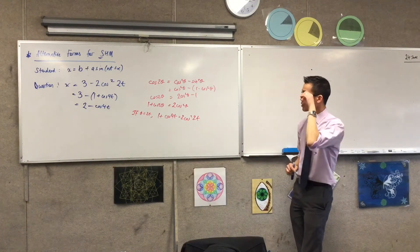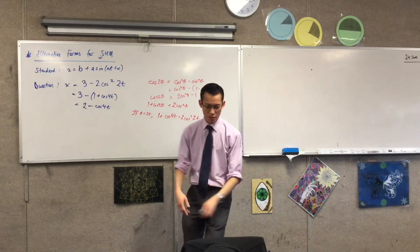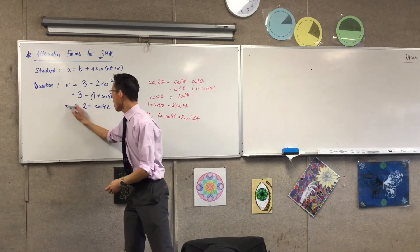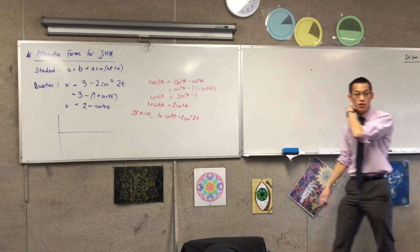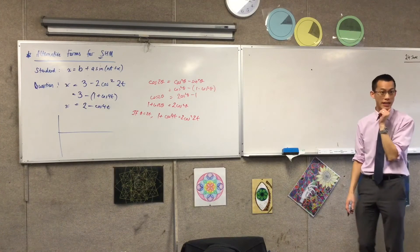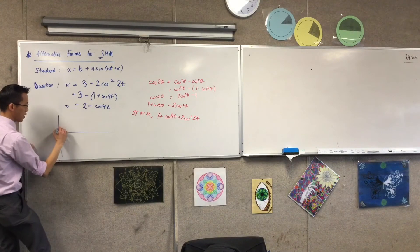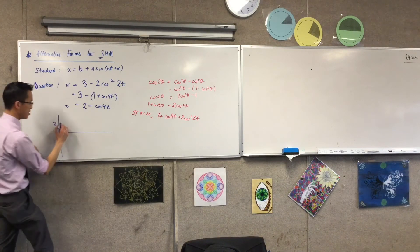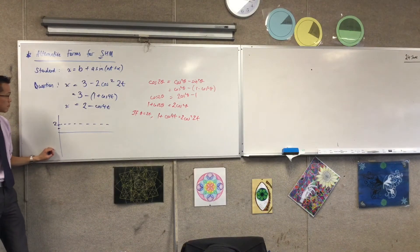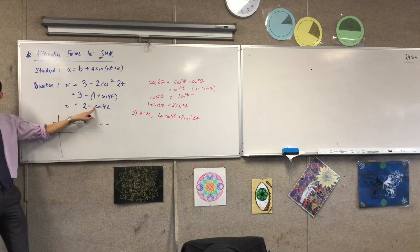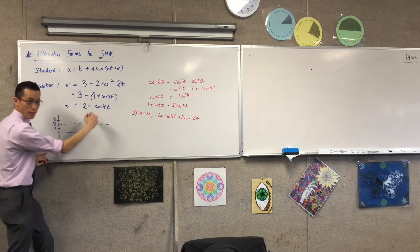When you have a look at this, you can answer questions based on this. I like to draw yourself up a rough set of axes. You can see there's a center of motion. What's the center of motion? The center of motion is just this constant out the front, so 2, like that. There's your center of motion. What's my amplitude? It's this coefficient here, which is 1, so I'm going to be between 1 and 3. That's where I'm waving in between.